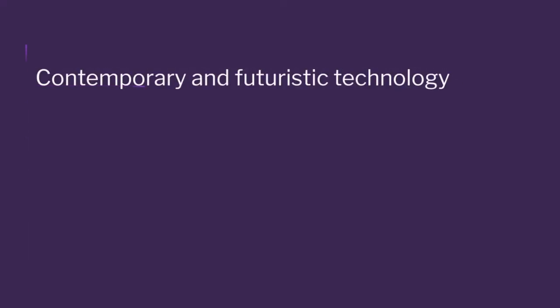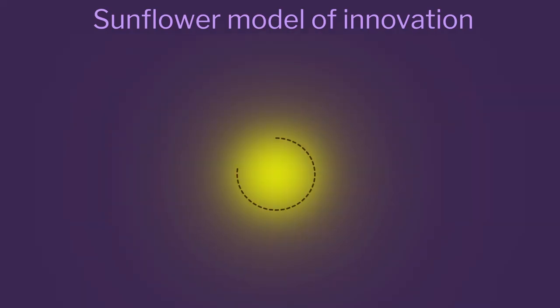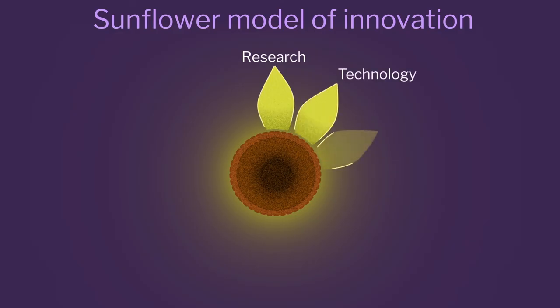Innovation, if it has to happen, has to be across all segments of the product. You have to have technology that is contemporary and futuristic, excellent user interfaces, phenomenally good manufacturing, and very good management systems in place. We just had to make incremental changes in the other sections. I call this the sunflower model of innovation — if you take care of all aspects of the petal, the petal will look towards the sun, which represents the user, and you have innovation in your hand.